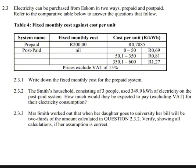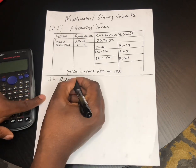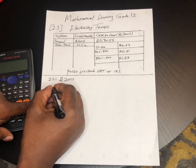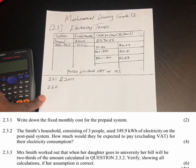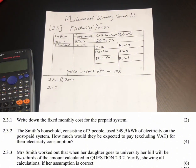The first question, 2.3.1, says: write down the fixed monthly cost for the prepaid system. The prepaid system has a fixed monthly cost of 200 rands — that is the answer, you just write 200.